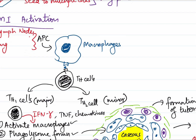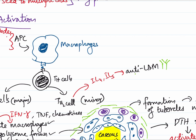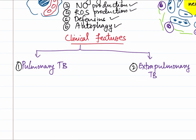Now a few words about the Th2 system, which is the minor response. Th2 cells will secrete IL-4 and IL-5, activating humoral immunity and leading to the production of anti-LAM antibodies. Since Mycobacterium tuberculosis is an obligate intracellular organism, humoral immune response has a limited role, as humoral responses are active against extracellular organisms. Therefore cell-mediated immunity is effective, whereas humoral immunity is not. However, anti-LAM antibodies do play a role in preventing the dissemination of tuberculosis in children.